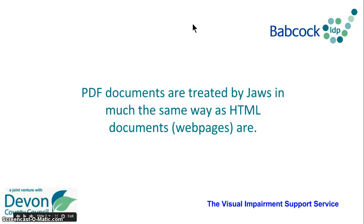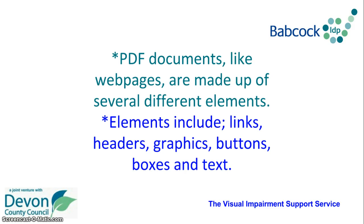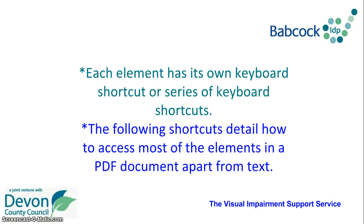PDF documents are treated by JAWS in much the same way as HTML documents or web pages are. PDF documents, like web pages, are made up of several different elements, and these elements include links, headers, graphics, buttons, boxes and text. Each element has its own keyboard shortcut or series of keyboard shortcuts that enable you to quickly access the information they hold. The following shortcuts detail how to access most of the elements in a PDF document, apart from those shortcuts which apply to reading the text.